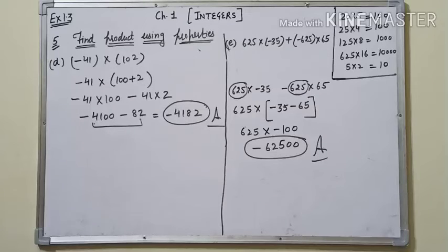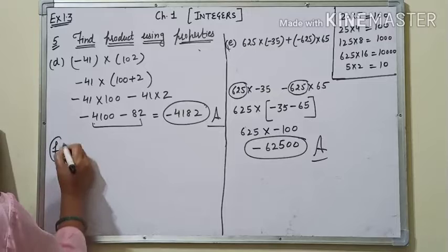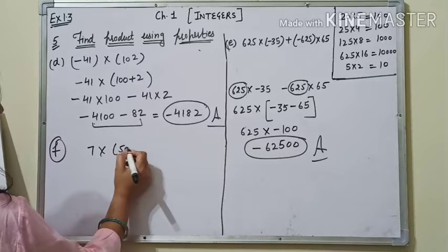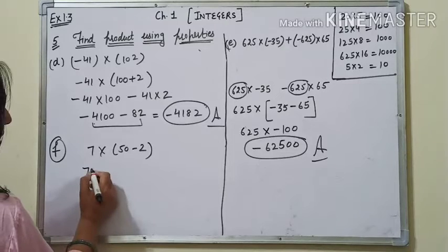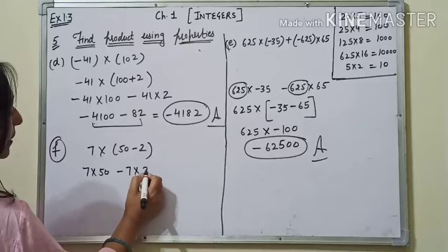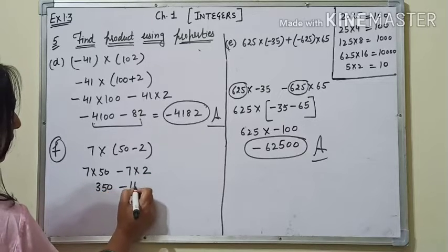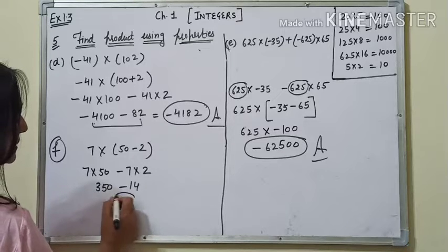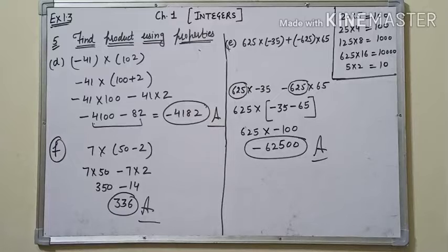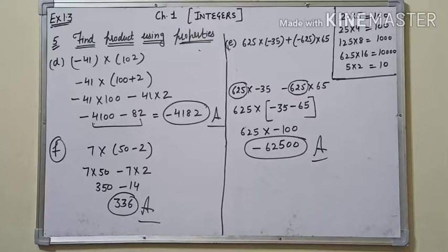हमारी properties को use करने का main motive अपनी calculations को कम करना है। हम properties को use कर रहे हैं और हमारी calculation बिल्कुल कम होती जा रही है। Part f: 7 × (50 - 2). Distribute: 7 × 50 minus 7 × 2 = 350 minus 14 = 336. Property से आसानी से हो गया — simply 7 का table और 5 का table।